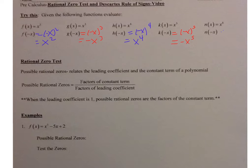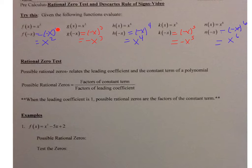Last one: x to the sixth. Negative x to the sixth — negative x times itself six times — equals positive x to the sixth. Notice that when you have an even exponent, it's always going to be positive because you're multiplying an even number of times. When you have an odd exponent, it's always going to be negative.